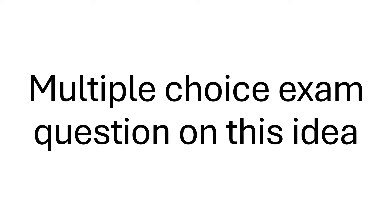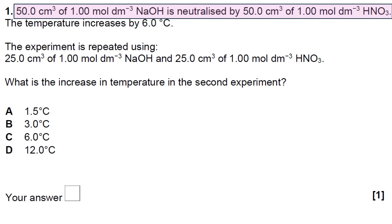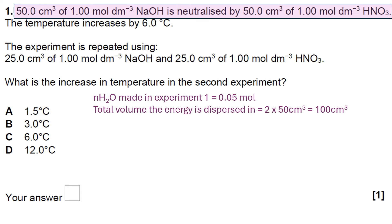Let's look at a multiple choice exam question to see how this might come across in a paper. There are two scenarios. In the first experiment, highlighted in purple, the number of moles of water made is 0.05. That's calculated by taking 50 divided by 1000 and multiplying by 1.00 — done for either the NaOH or the HNO₃, since it's a one-to-one mole ratio. The total volume the energy is dispersed in is 100 cm³.